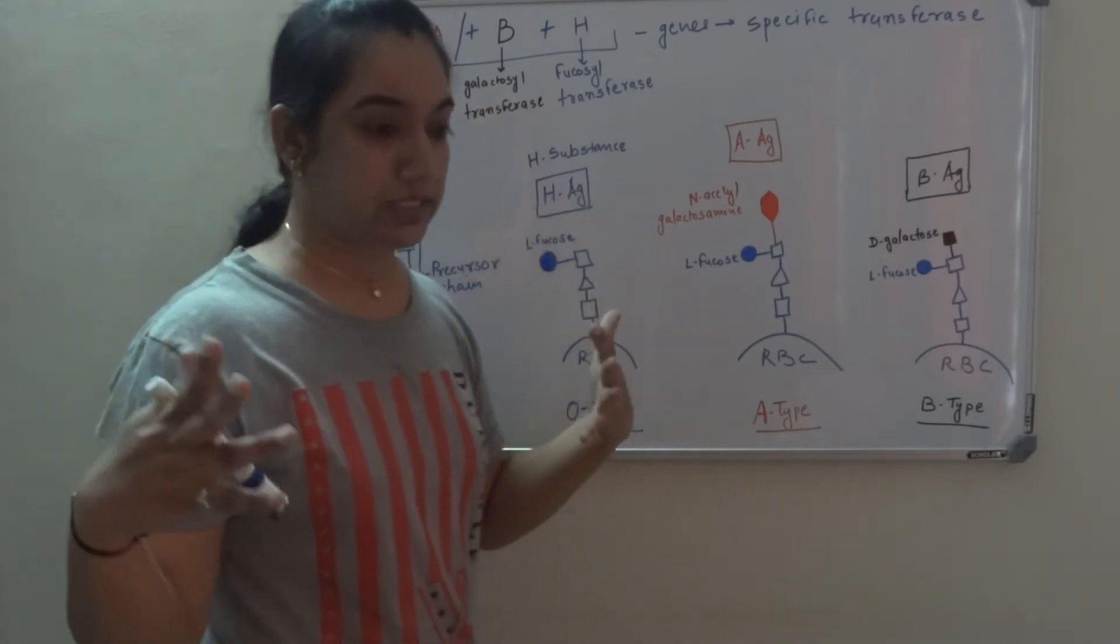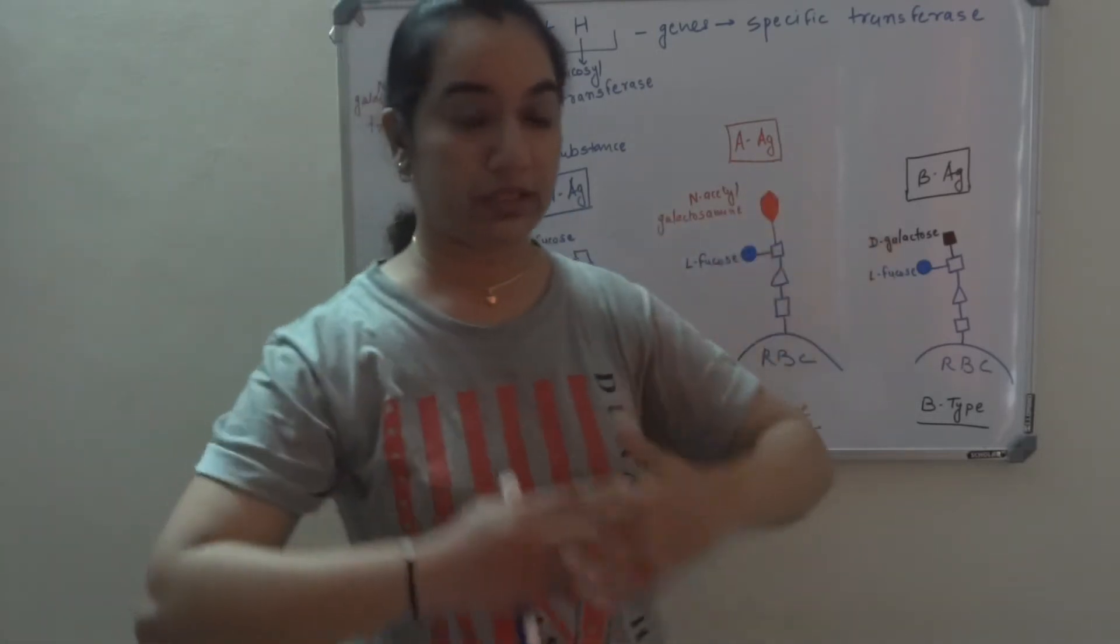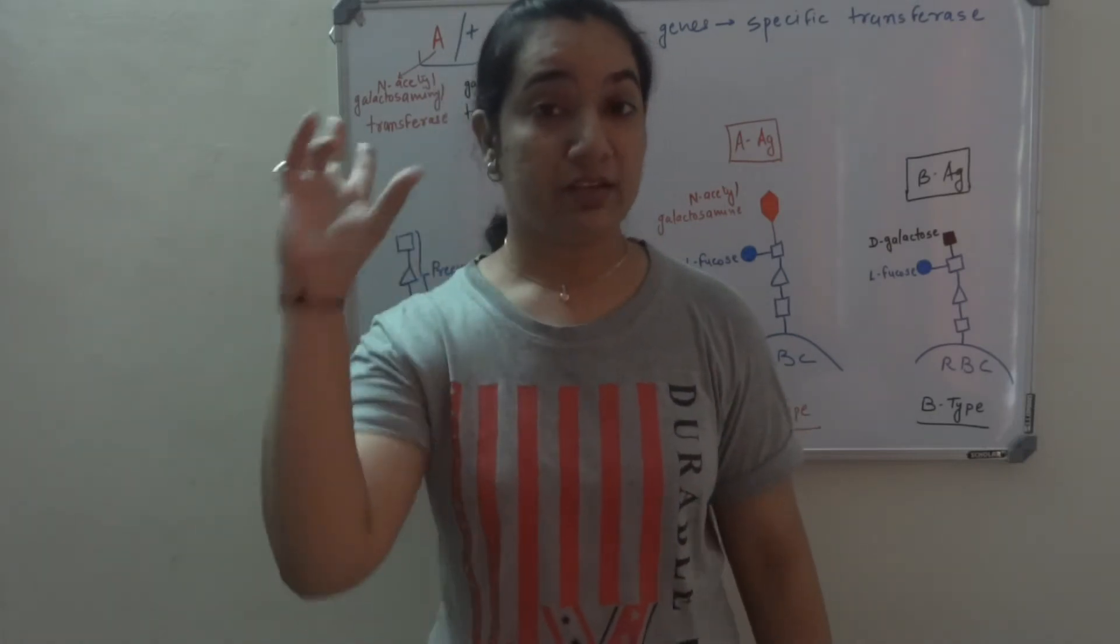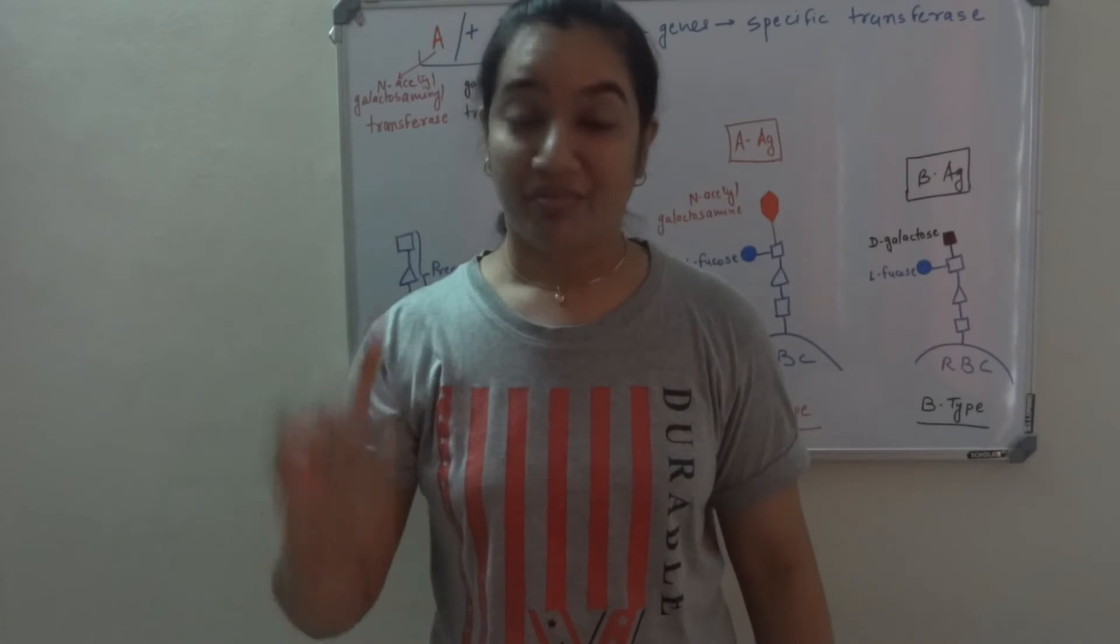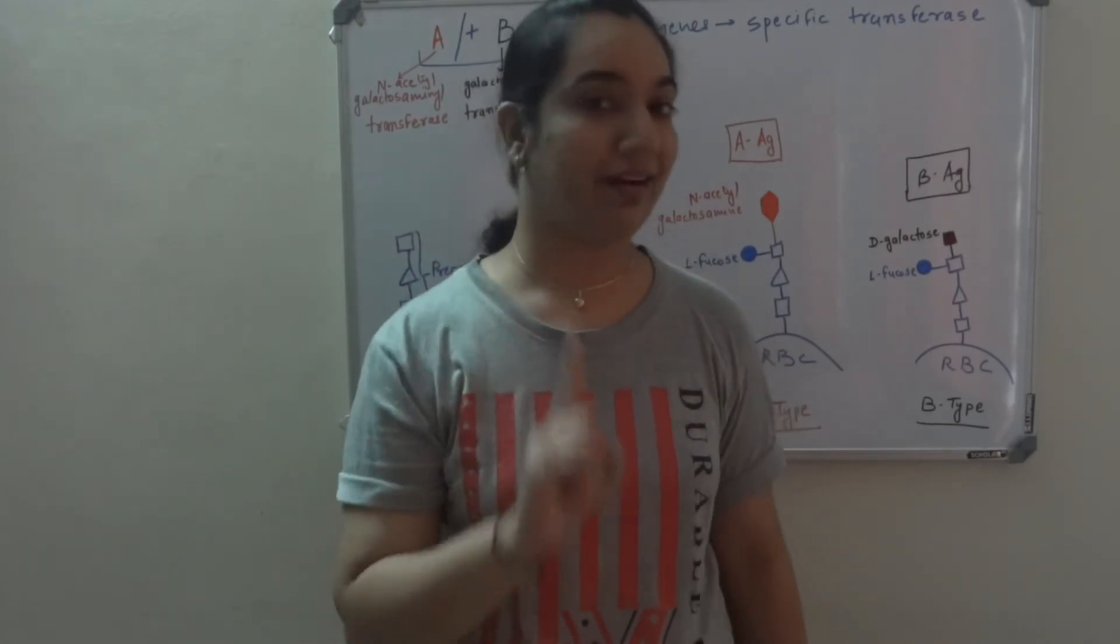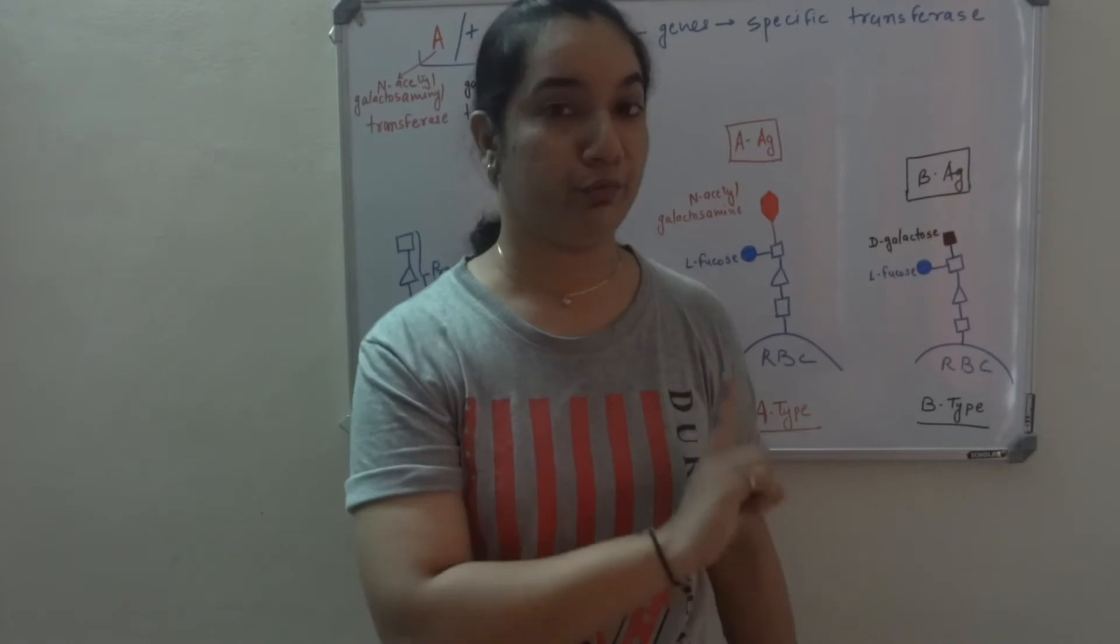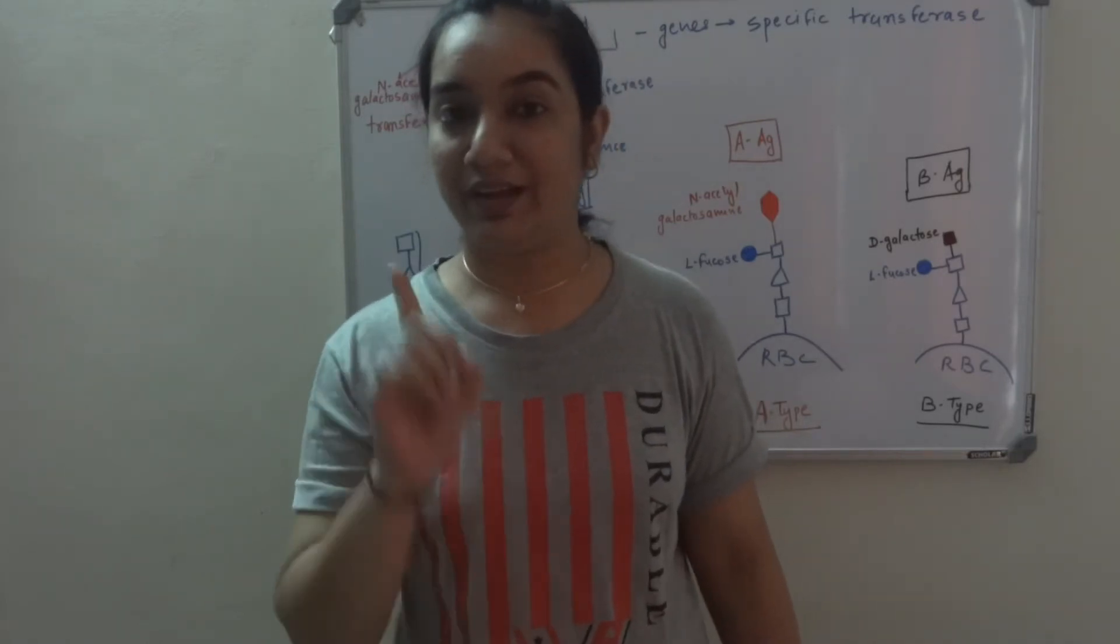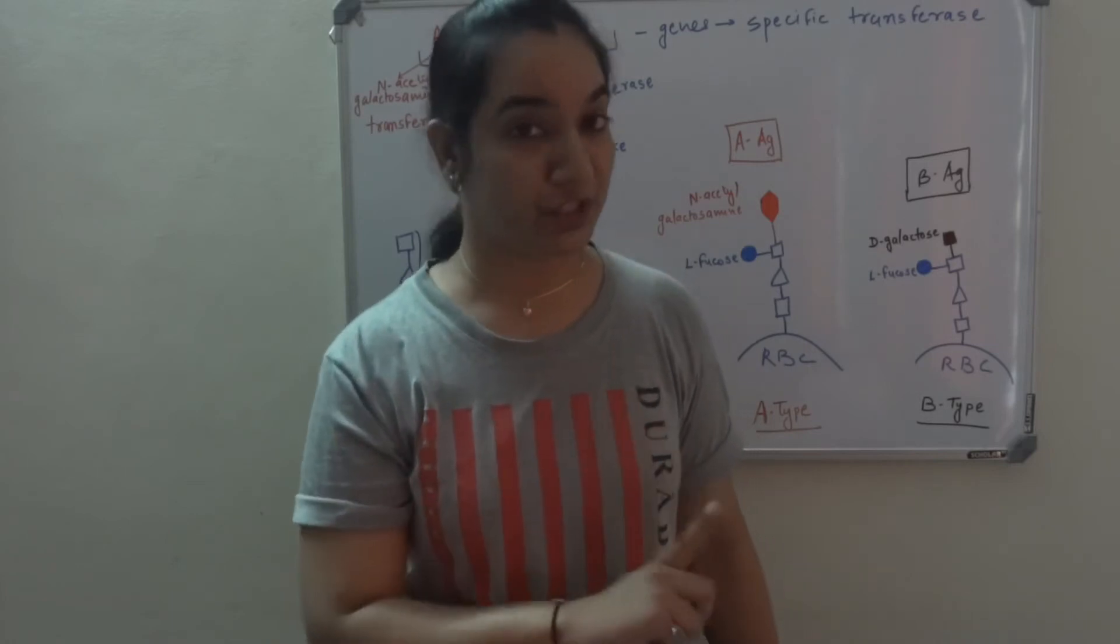Generally, we have this concept that A and B, nothing is present, they are classified as O. No. The individual which has only gene H, that means there are only L-fucose attached to RBC, they are classified as blood group O. When you say there is nothing present on RBC, that is where exactly Bombay blood group comes into picture.